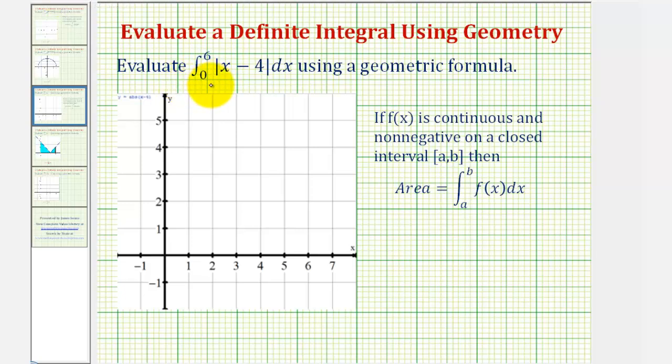We want to evaluate the given definite integral using a geometric formula. If a given function f(x) is continuous and non-negative on a closed interval from a to b, then the area under that function and above the x-axis is equal to the definite integral of f(x) from a to b.